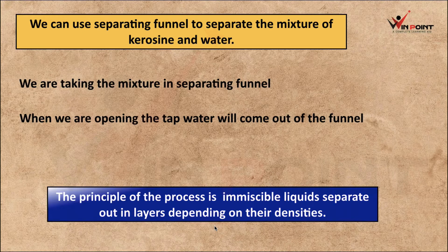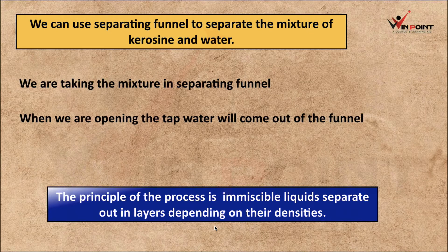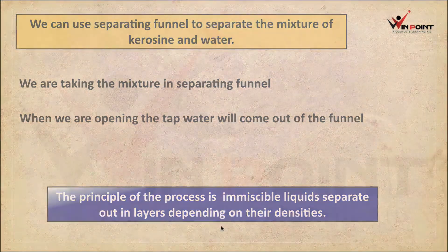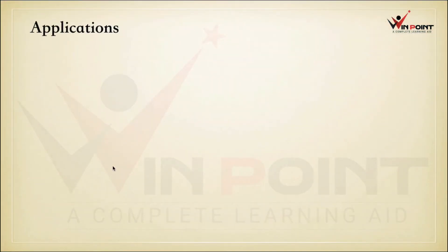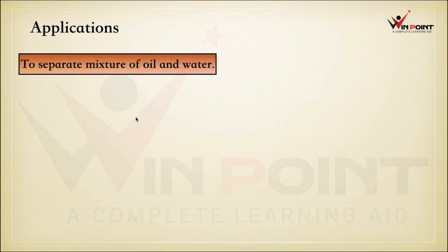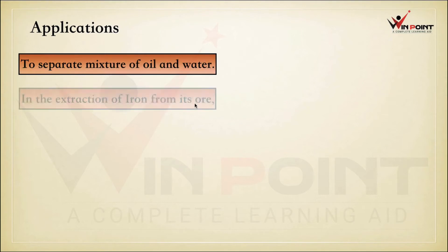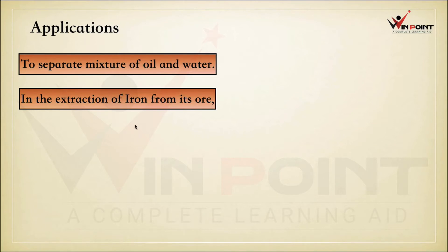We open the tap and the water comes out. When the last drop of water is coming out, we immediately close the tap and we will get kerosene separately. If we want, we can collect the water in a beaker. Applications: to separate a mixture of oil and water, and in the extraction of iron from its ore, we use a separating funnel.